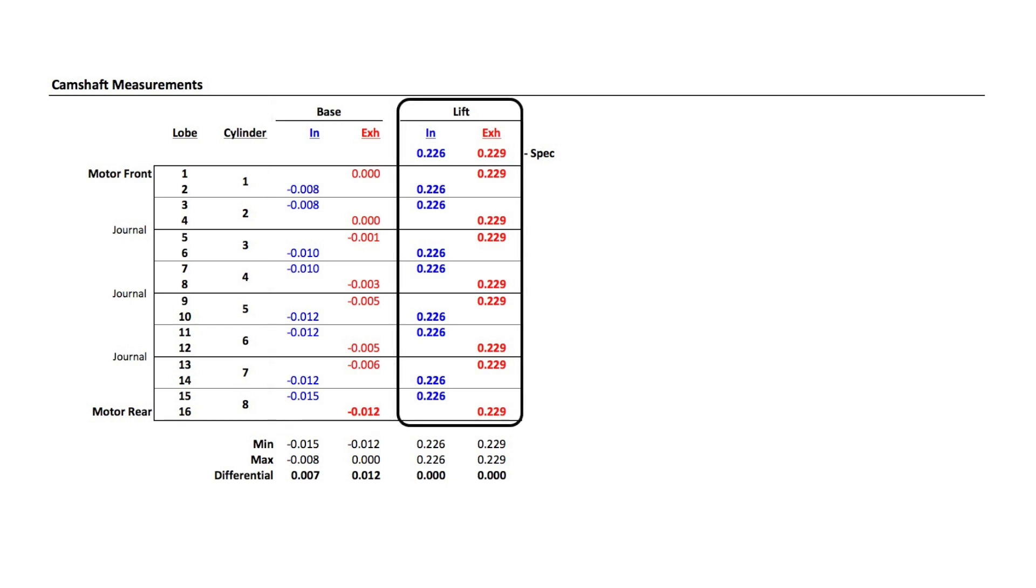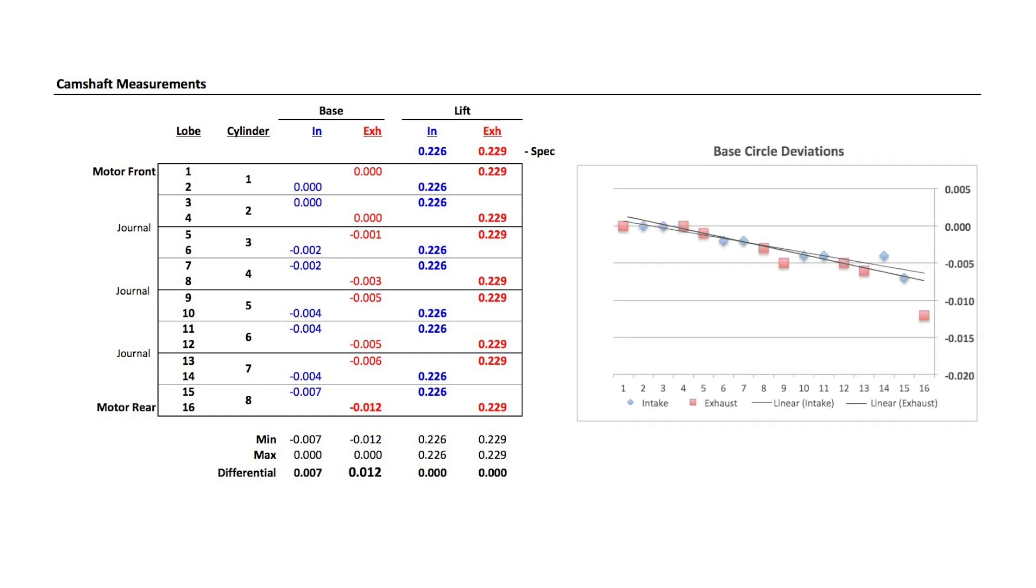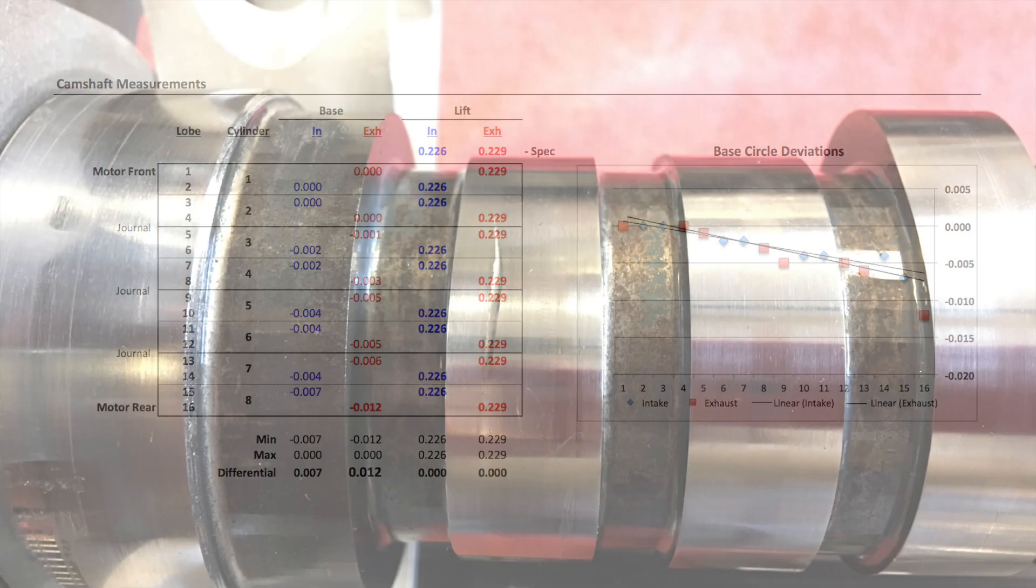The lobe lifts are as they should be. There was no lift variation with each lobe by machining or wear. If I add 8 thousandths of an inch to the base circle values of intake lobes, it gives a little better perspective of what they did. They reground the camshaft, probably trying to deal with this.